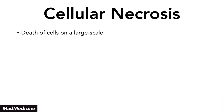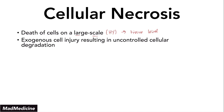Cell necrosis is death of cells on a large scale — this is very important and very high yield, because it is a key differentiating factor from cell apoptosis and other mechanisms. Large scale means this is occurring at the tissue level, not at the molecular or cellular level. Usually cell necrosis occurs because of an exogenous cell injury — an external injury that results in uncontrolled cellular degradation.